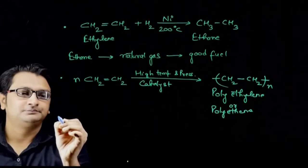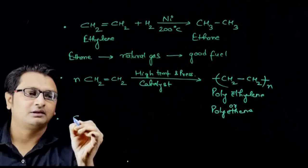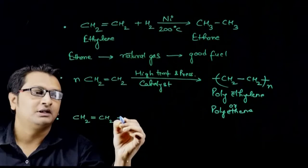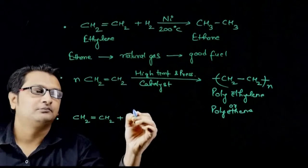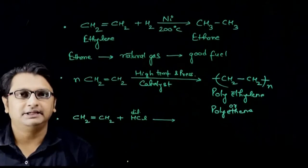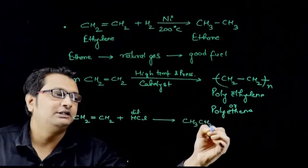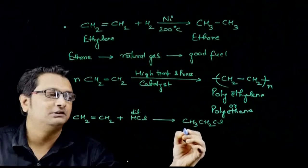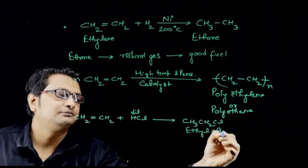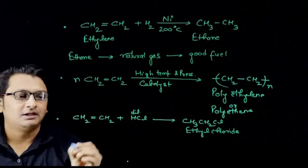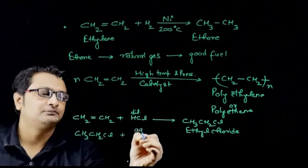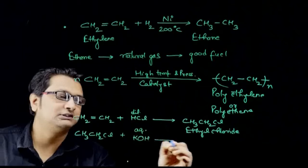Next is when unsaturated ethylene reacts with dilute hydrochloric acid through an addition reaction, a saturated organic compound is formed whose name is ethyl chloride. This ethyl chloride when treated with aqueous potassium hydroxide solution